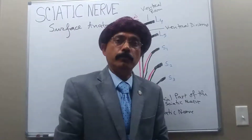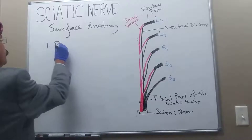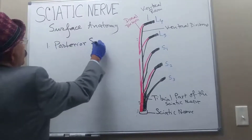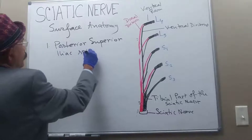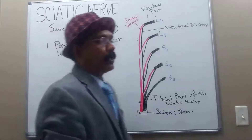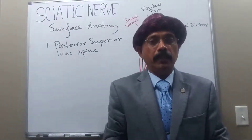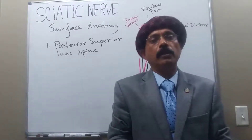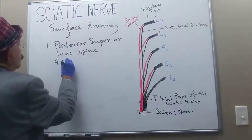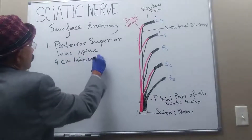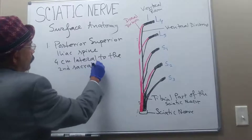What are the points to draw a sciatic nerve? We have the posterior superior iliac spine. How can you identify the posterior superior iliac spine? It is a dimple at the lower part of the back, around four centimeters lateral to the second sacral spine.